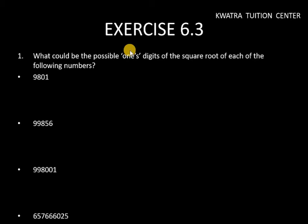Hello everyone, let's start with question number 1 of exercise 6.3. In this, it asks what could be the possible one's digit of the square root of each of the following numbers.